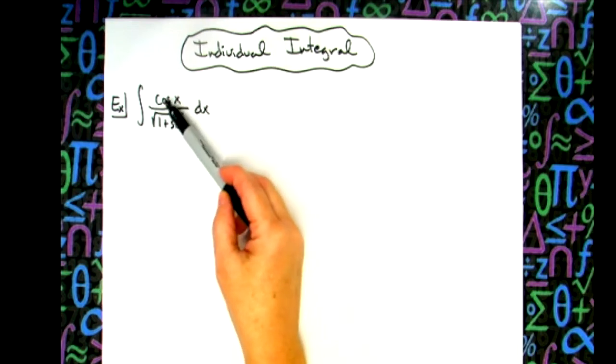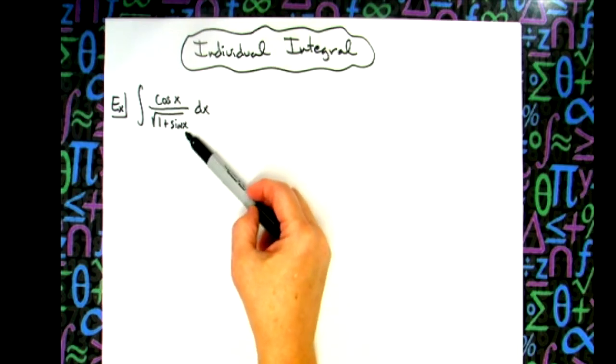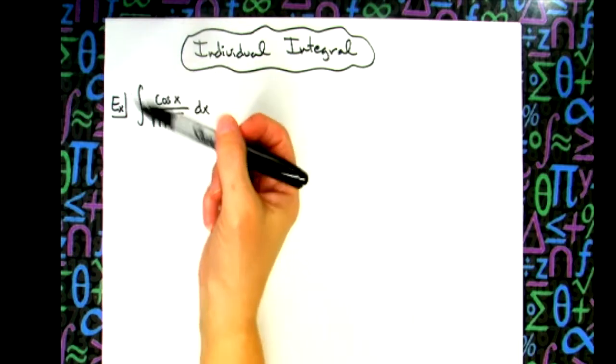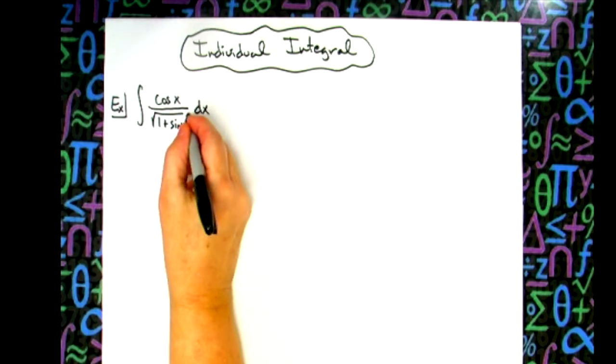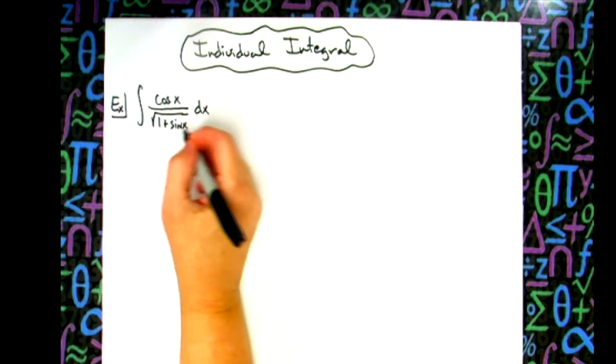So we've got the integral of cosine x over square root 1 plus sine x. The key here is to think ahead, but also look at that denominator and see if you can find an inside part.